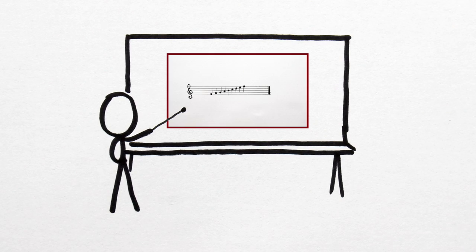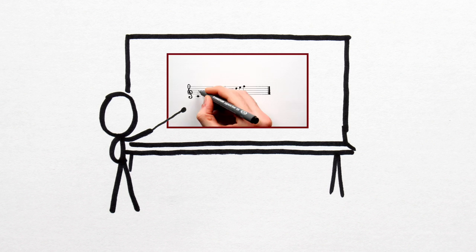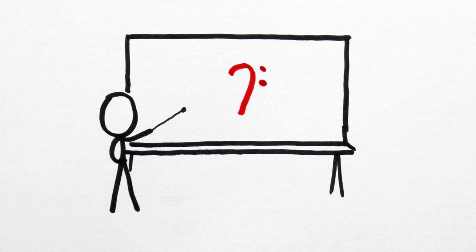So, last time we dealt with the ledger lines and ledger spaces of the treble stave. Today, let's do the same for the bass stave.